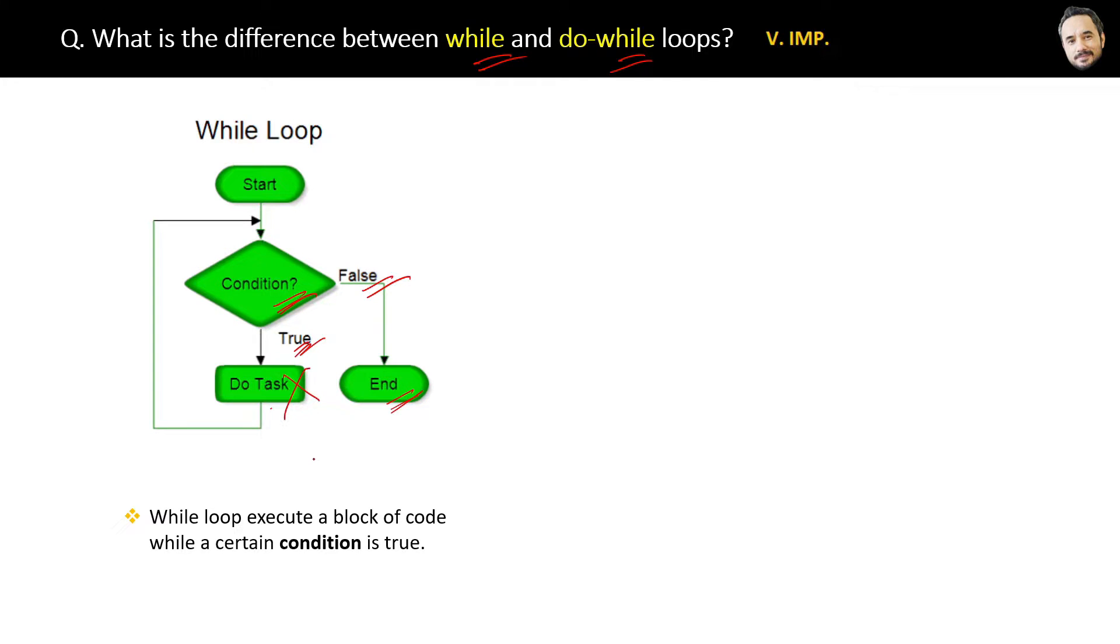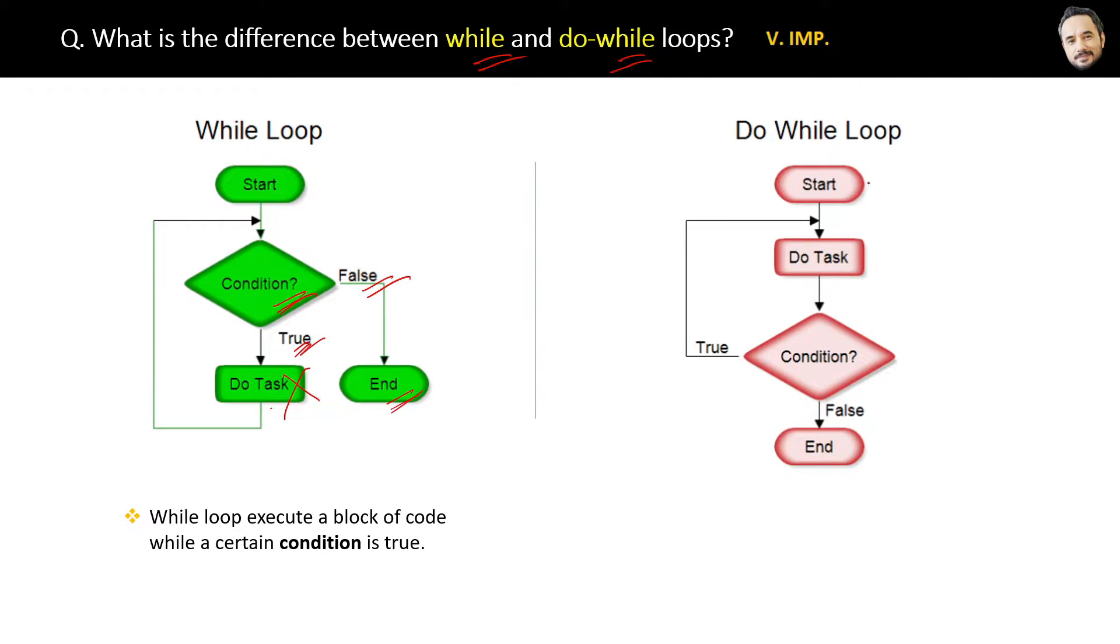Now here is the diagram of the do-while loop. The do-while loop is similar to the while loop, except that the block of code is executed at least one time, even if the condition is false. Meaning the do block will execute at least the first time, and then after the second time, its execution will be dependent on the result of the condition only.